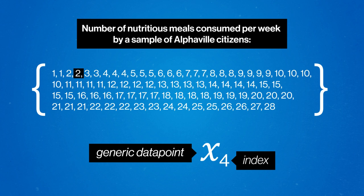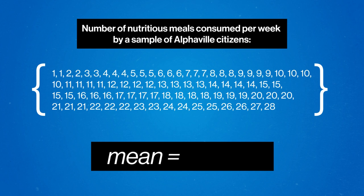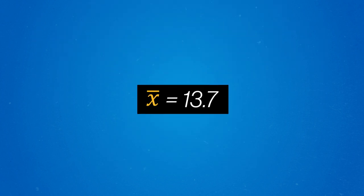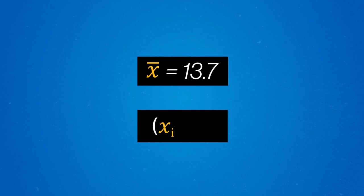Then to calculate a standard deviation, first we calculate our mean, just like last episode. And we clearly mark it as the mean for anyone reading our work later by labeling it with the notation X-bar — an X with a bar on top. For Alphaville, Ashley found the mean was equal to about 13.7. This is what we treat as the center point of the data, and it's what we calculate the distance of every data point from, by taking the mean and subtracting it from each data point, one at a time.